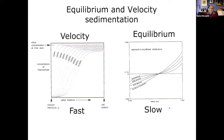There are two types of experiment: sedimentation velocity, where you spin very fast and everything sediments down, and sedimentation equilibrium, where you spin relatively slowly so the concentration profile doesn't change over time.